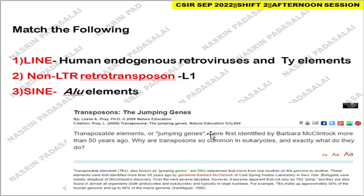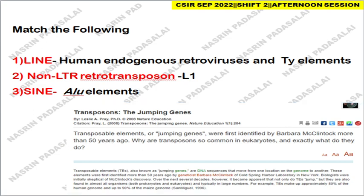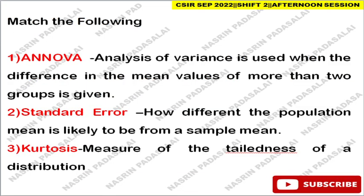The next question is regarding transposons. You can refer this particular article available on the Nature website — it provides a detailed and crisp explanation for the CSIR examination. Examples of LTR retrotransposons include human endogenous retrovirus and Ty elements. Examples of non-LTR retrotransposons include L1, and examples of SINE elements include the Alu element.